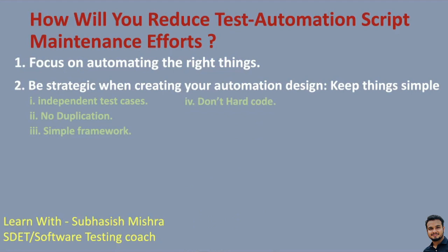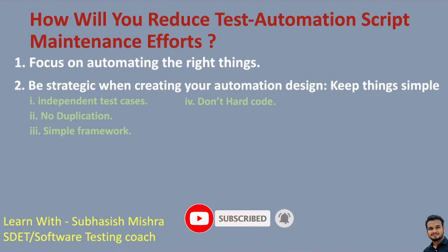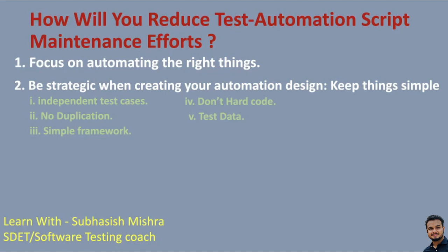The next point is do not hardcode any values. You can always use a config file to store static data — for example, browser-specific information, your application URL, screenshot path, test environment details, and login credentials. All these things you can keep in a separate file; you should not hardcode them in your tests. Regarding test data: it plays a very important role in automation testing. You should always keep your test data separately — you may keep it in an Excel file or use a data provider such as TestNG data provider.